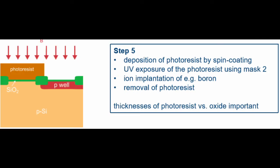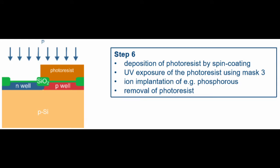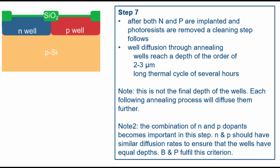Now the flow arrives at the N and P well formation. A photoresist is deposited using a mask. Ion implantation of a P-type dopant is induced into the silicon substrate — it passes through the oxide layer and is embedded near the surface. The same is done for the N-type dopant. Notice that the P-well and N-well have exactly the same depth. It is important to control this depth and the rate at which the well grows, as seen in the next step where annealing occurs to grow the wells.